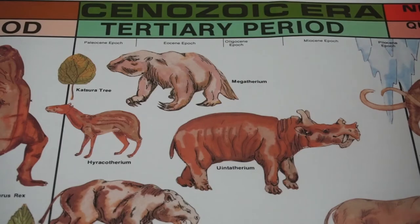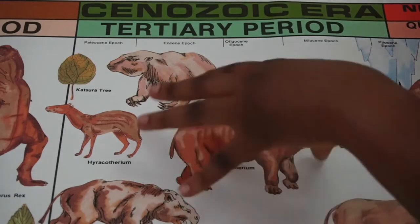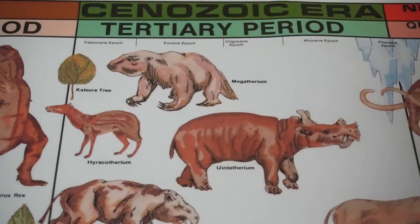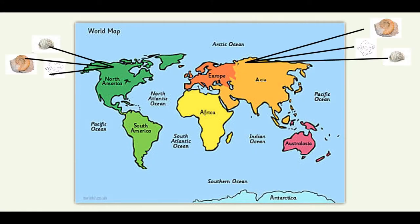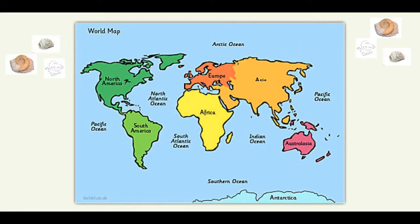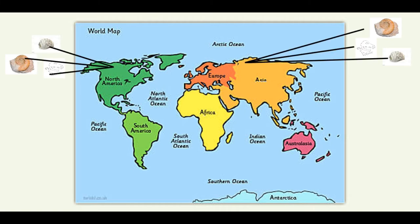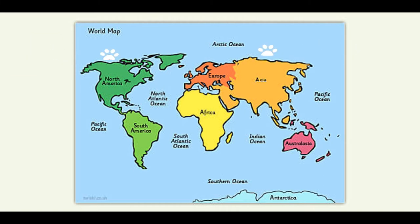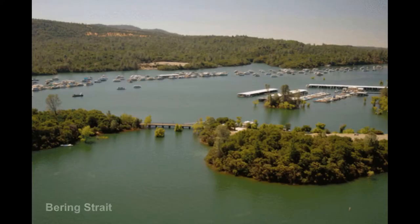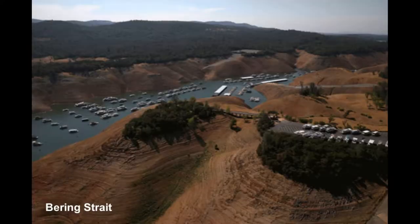All the water animals that had no backbones were used to name these epochs. Fossils of North American animals were so similar to those of Eurasia that scientists agree a connection between the continents had to have existed during the Tertiary Period, probably across what is now called the Bering Straits.